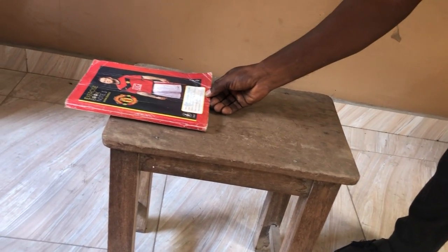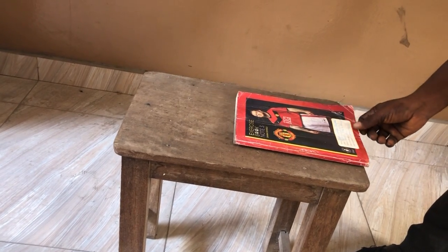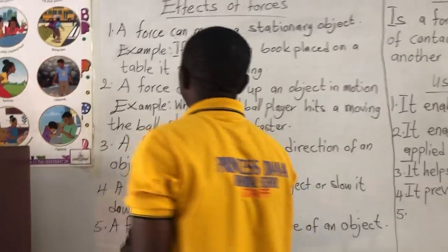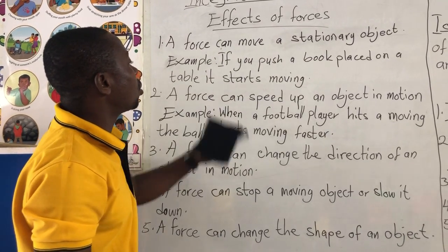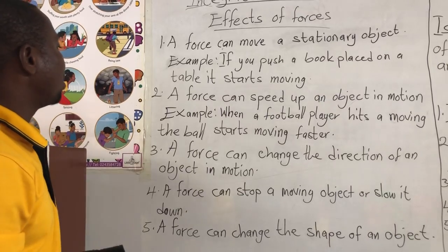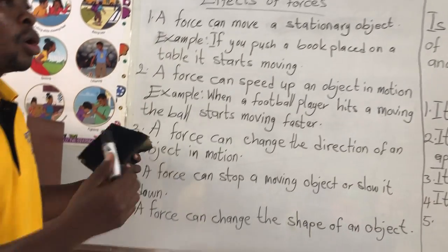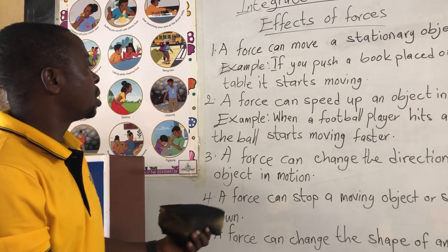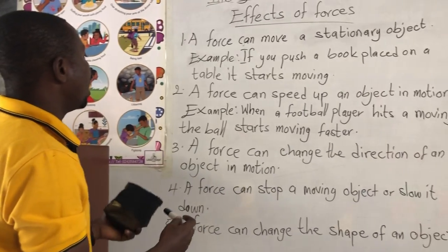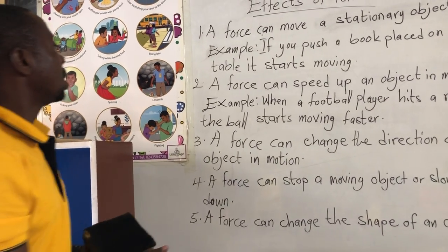We could see that the boot started moving. Now let me pull it and see. So an example is: if you push a boot placed on a table, it starts moving, as demonstrated. So a force can move a stationary object — it can make an object that is at one place to move. When a ball is at one place and you kick the ball, you apply force, and you see that the ball starts moving.